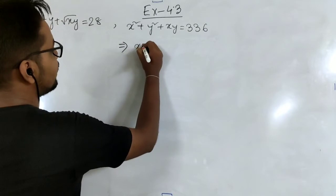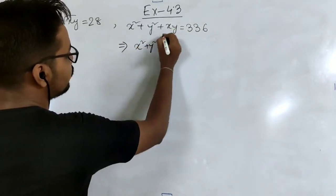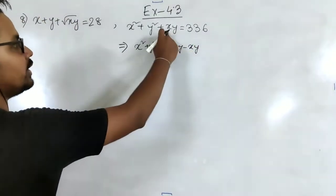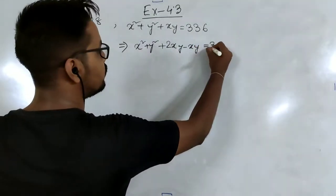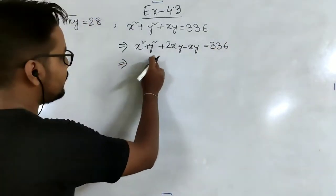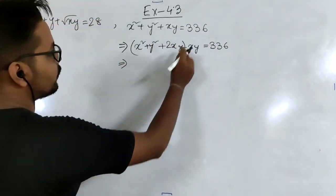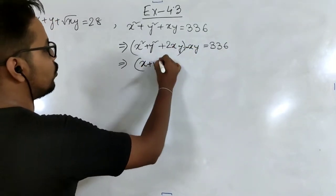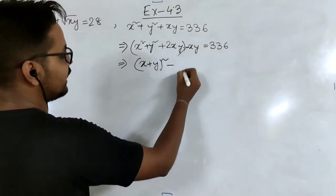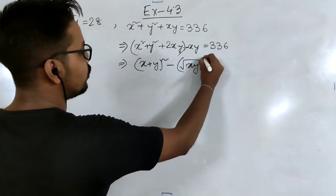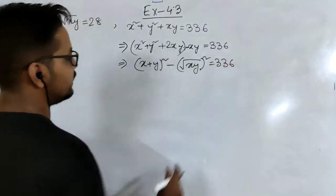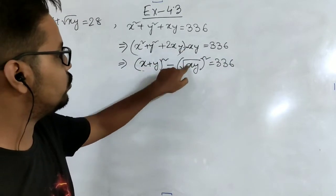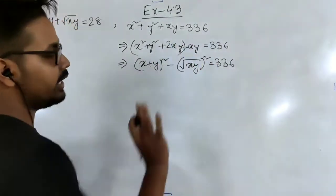We write x squared plus y squared plus 2xy minus xy equal to 336. Bringing the first three terms together gives (x plus y) whole squared, and minus xy can be written as minus (root xy) whole squared, so it is (x plus y)² minus (root xy)² equal to 336. This is the a² minus b² formula, which equals (a plus b)(a minus b).